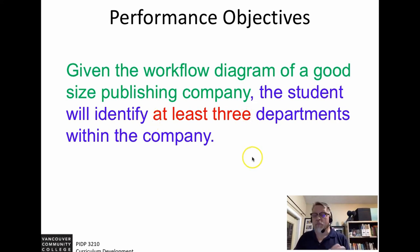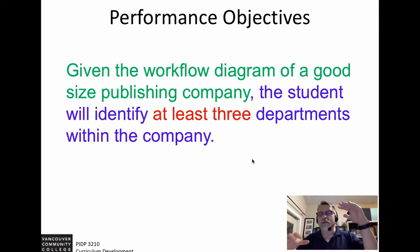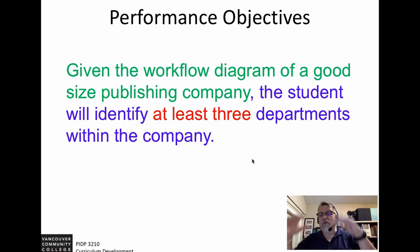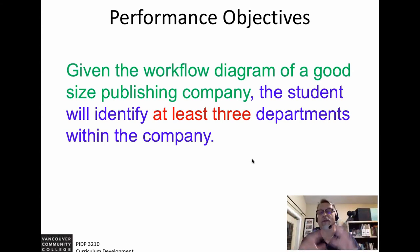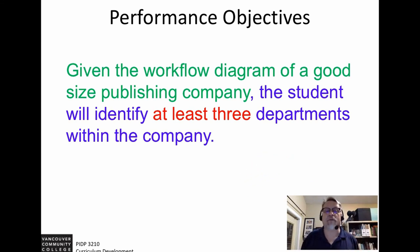The condition is 'given the workflow diagram of a good-size publishing company,' and the criteria is 'at least three departments.' You'll notice that the condition and criteria can actually appear in different sections within the statement. Let's take a look at another example.